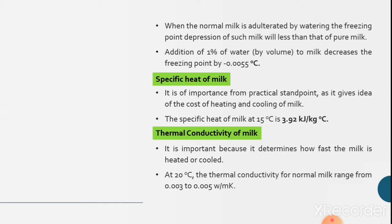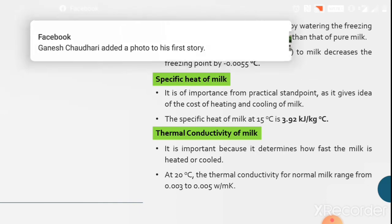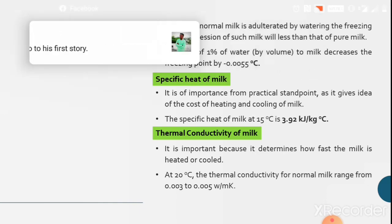Thermal conductivity of milk. It is important because it determines how fast the milk is heated or cooled. At 20 degrees Celsius the thermal conductivity for normal milk ranges from 0.003 to 0.005 Watt per meter kelvin.